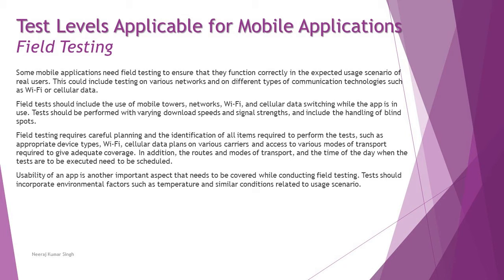The routes, mode of transport, and time of day when tests are executed should be scheduled appropriately. For example, during daytime traffic congestion many devices are in close proximity, which may impact the app. Conversely, traveling at midnight with few other users gives much better bandwidth. Tests should be planned to cover both these scenarios and assess their impact on the app.